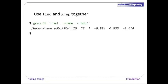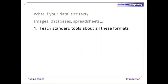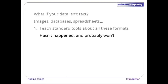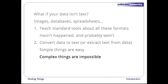So far, we have focused exclusively on finding things in text files. What if your data isn't text — what if we have images, databases, spreadsheets, or some other format? There are basically three options. The first is to extend tools like grep to handle those formats. This hasn't happened and probably won't because there are too many formats to support. The second option is to convert the data to text or extract the texty bits from the data, which is probably the most common approach. On the positive side, this makes simple things easy to do; on the negative side, complex things are usually impossible.